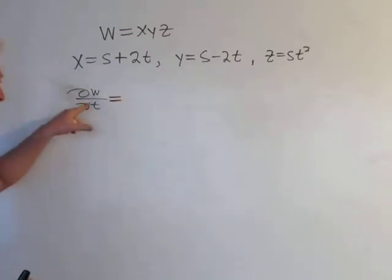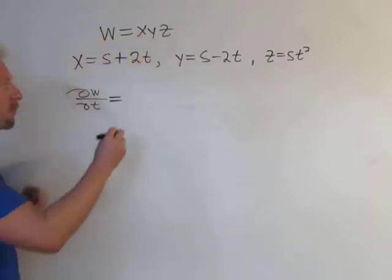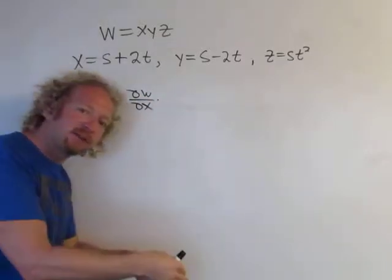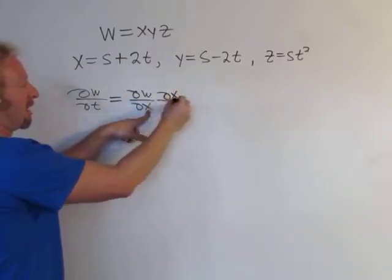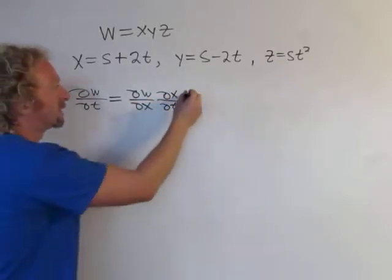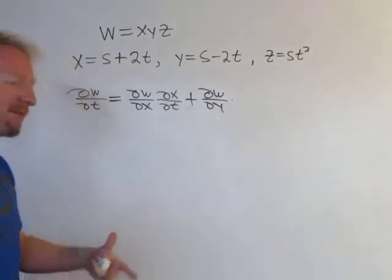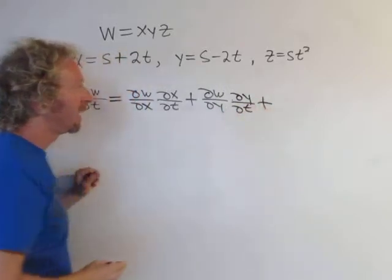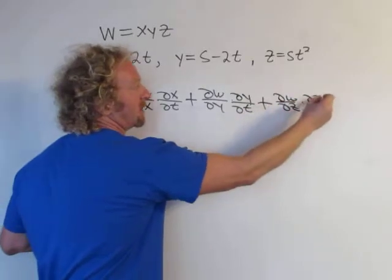To use the chain rule, it's pretty simple. You take the partial of each piece. First, we take the partial of w with respect to x, then multiply by the derivative of the inside function. So we take ∂x/∂t. Plus, we take the partial with respect to y times ∂y/∂t, plus the partial with respect to z times ∂z/∂t.